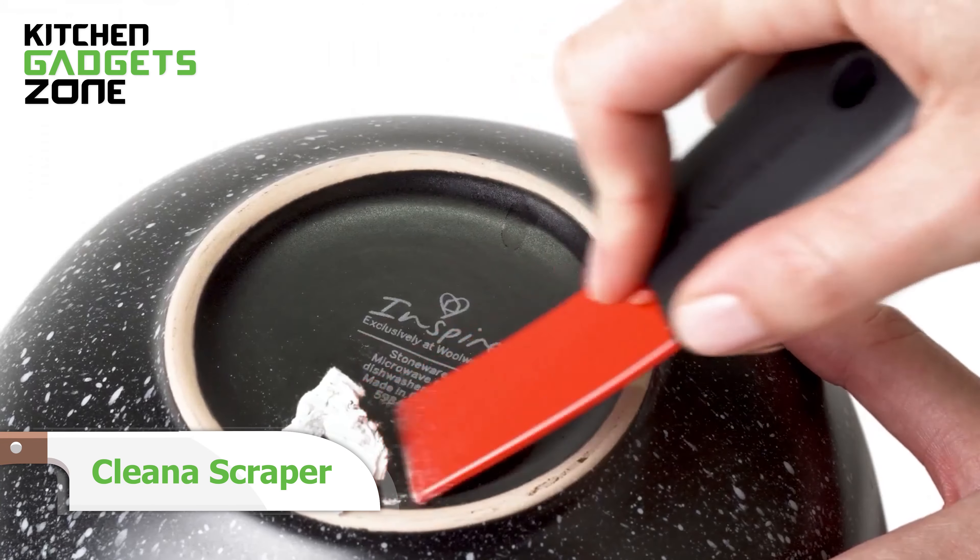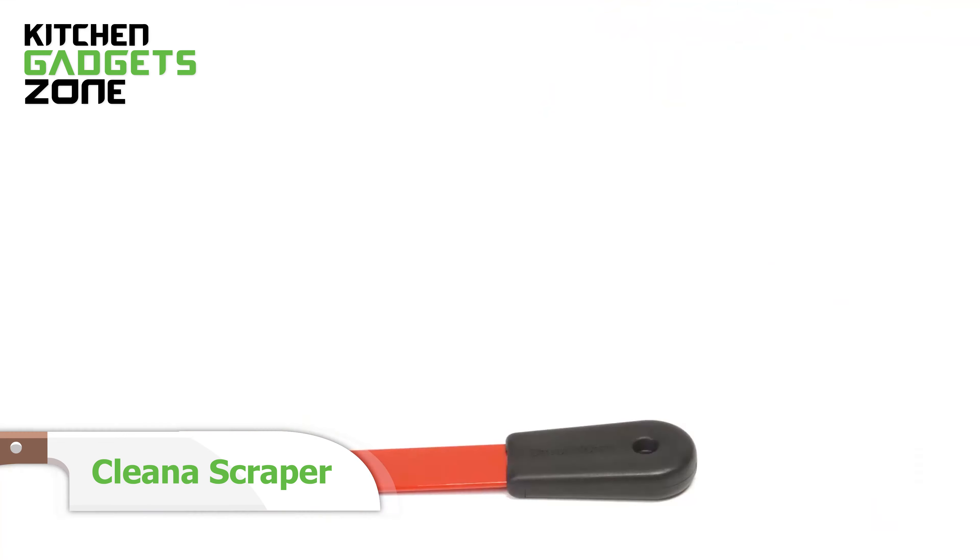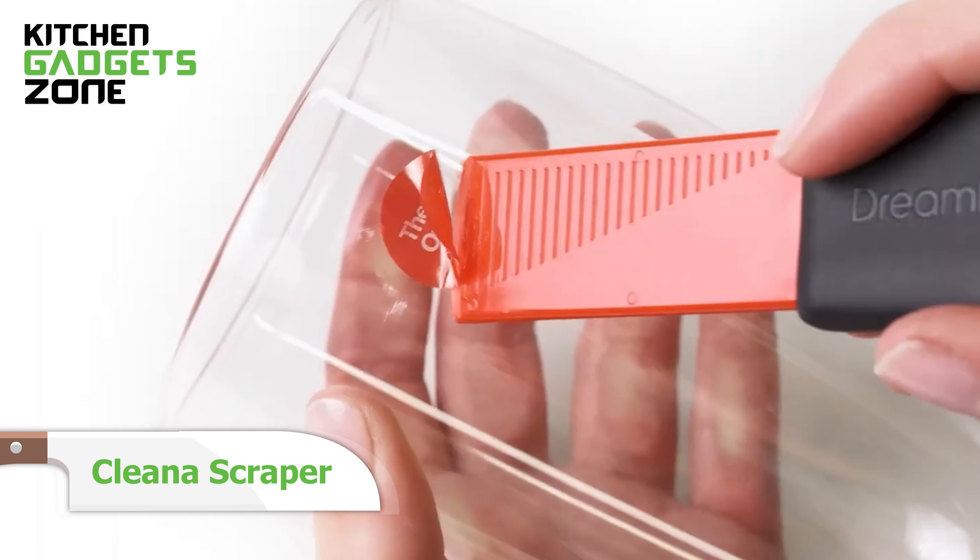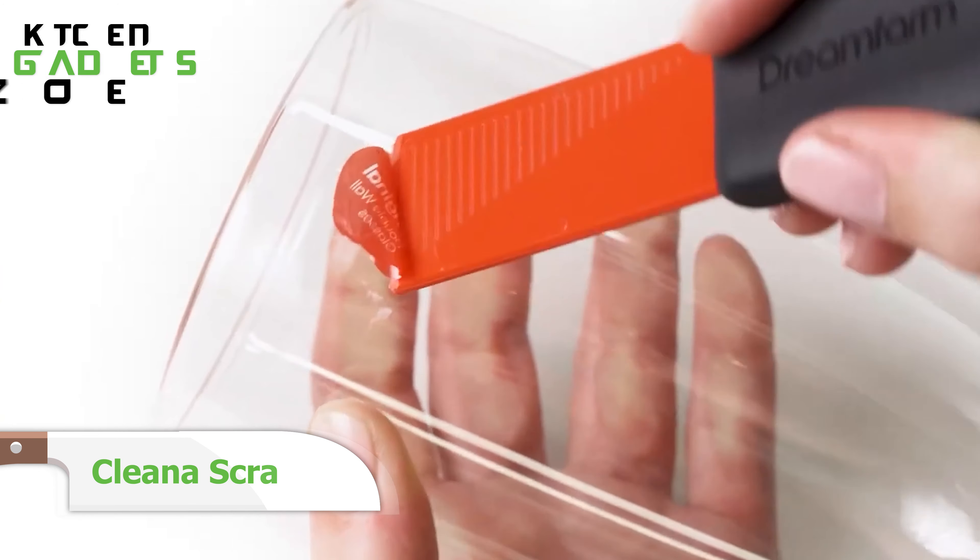Stubborn stains and baked-on grime can be a real headache in the kitchen. But fear not, the Kleena scraper is here to save the day.